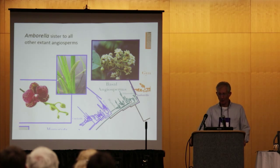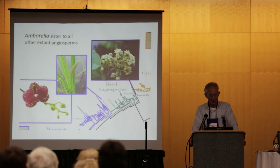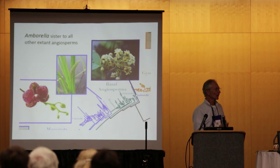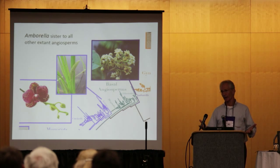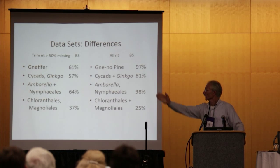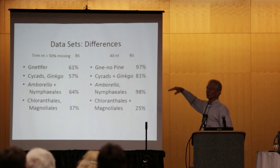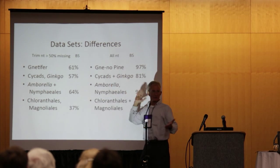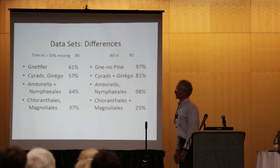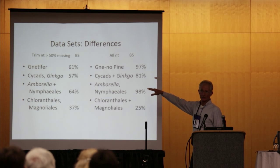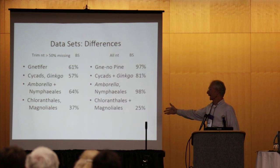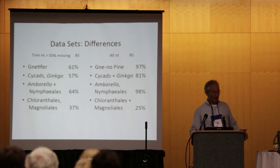Moving into the angiosperms, Amborella is recovered as sister to all other angiosperms, and Acorus is sister to the monocots. This tree is very comparable to published angiosperm phylogenies, which are largely based on Plastigenes — now we just have a lot more. There are differences when using our trimmed dataset, where 50% missing positions are removed. We get the NIDE hypothesis with cycads and then ginkgo as successive sisters, but with much poorer bootstrap support. The placement of Magnoliales and Chloranthales remains unclear with either dataset.